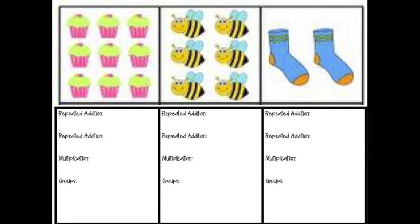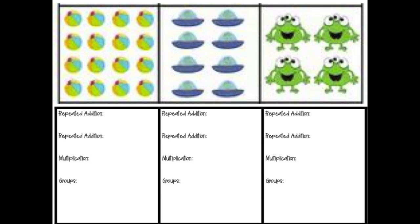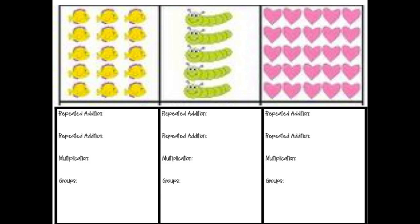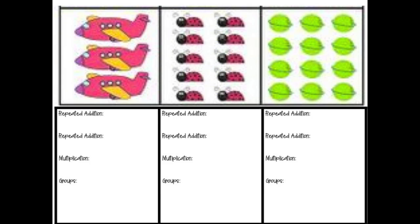Now it's time to work in your group to practice exactly what we have been doing together. Each group will receive a paper with three examples of arrays. With your paper, you need to provide two repeated addition sentences, a multiplication sentence, and also draw groups to demonstrate what is being shown in the pictures. When you're finished, we will all review and you will share with your group what your findings were. Look at each of these images — you're going to receive one of these and in the end we will practice and review together.